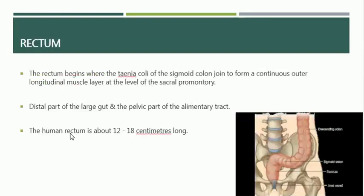The rectum is basically a part of the colon. The rectum begins where the taenia coli of the sigmoid colon join to form a continuous outer longitudinal muscle layer, which is at the level of the sacral promontory. Here you can see the beginning of the rectum — these are the taenia coli joining to form the continuous outer longitudinal muscle layer of the rectum. So the rectum is without taenia coli, and this is one identification point for the rectum.